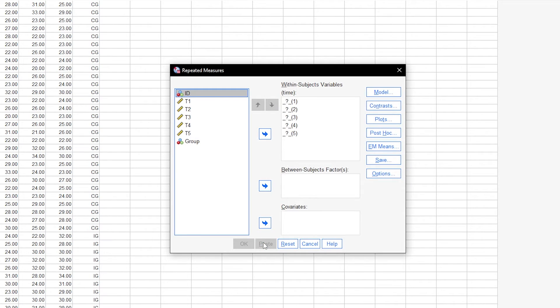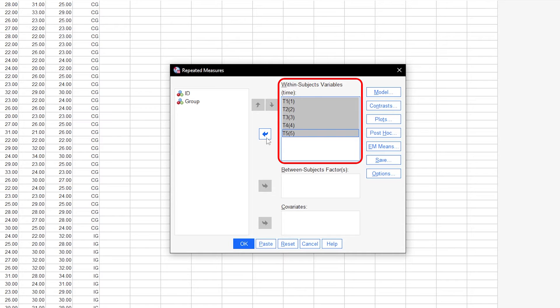The measured values for the within-subjects factor, that is, the measured values at the points in time, are now dragged into the within-subjects variables field. Since I also have a between-subjects factor, group in my example, this is also entered into the corresponding between-subjects factor box.